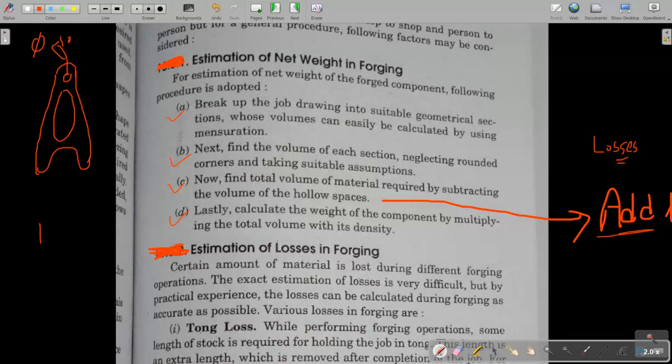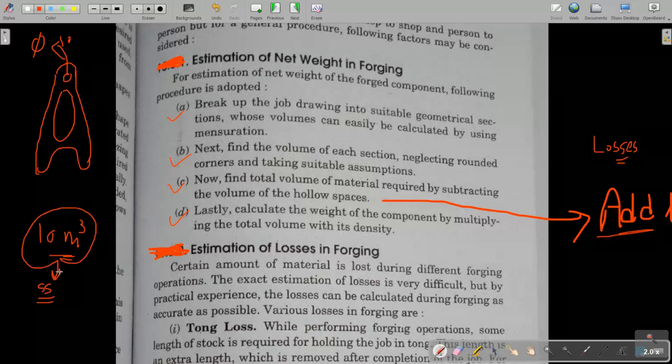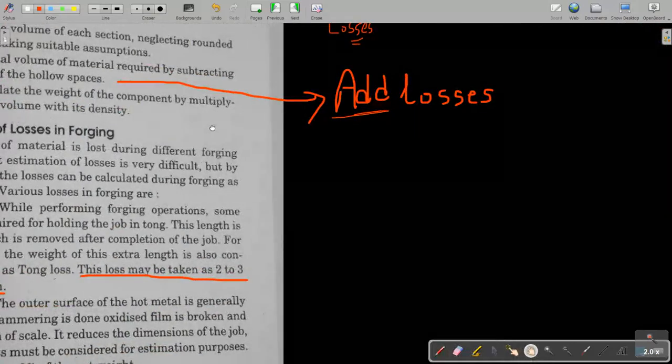For example, if you have found 10 meter cube total volume of the forging and you are going to forge with stainless steel material, so multiply this volume with the density of stainless steel or whatever material you are using. So you will get the total weight. So up to now I hope you are clear. What kind of losses are there? Here I have written add losses. Which kind of losses are there? So there are basically three to four losses.